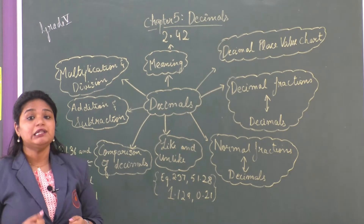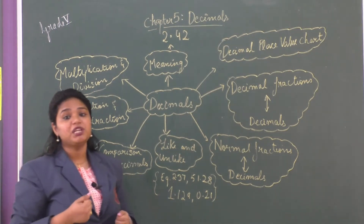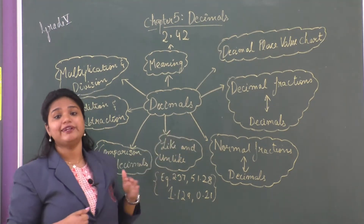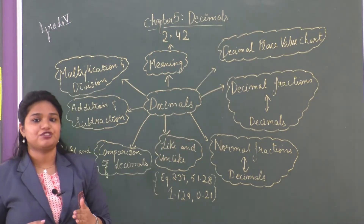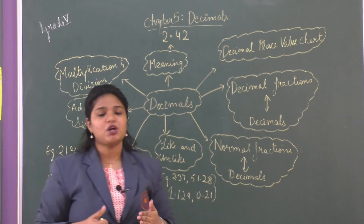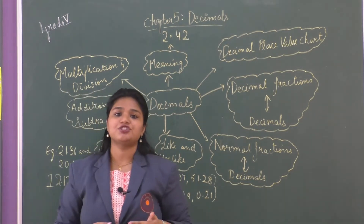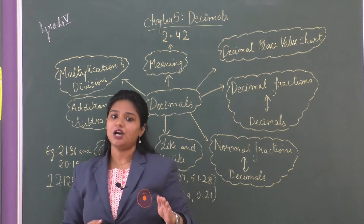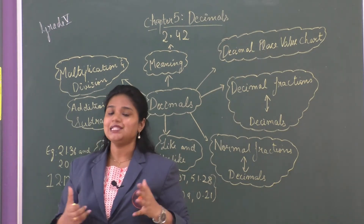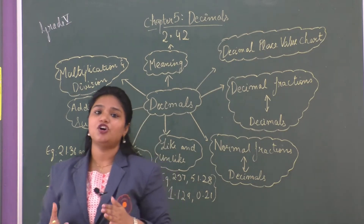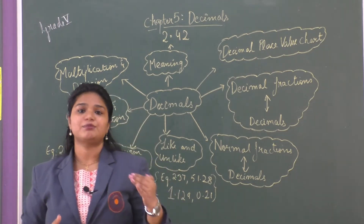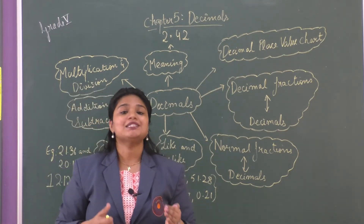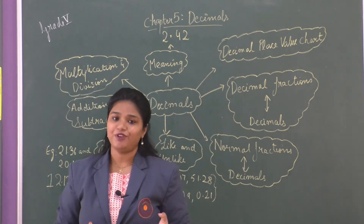We started the chapter by learning about the meaning of the term decimals or decimal fractions. We saw that the fractions which have the denominators 10, 100, 1000 — or we can say denominators as a multiple of 10 — are known as decimal fractions.